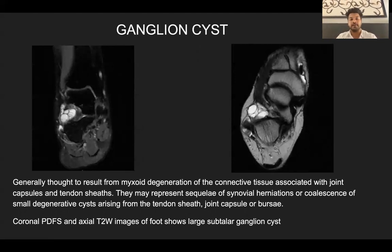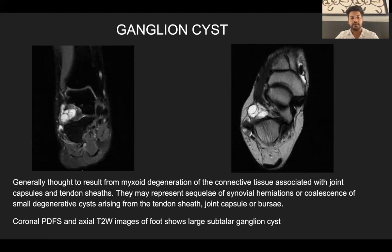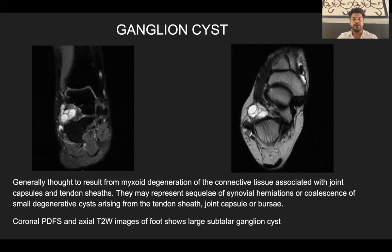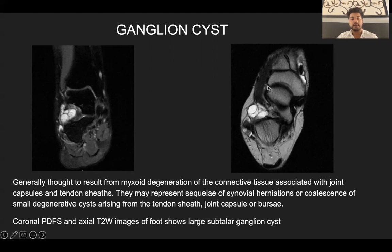The next common case was ganglion cyst. Ganglion cysts are generally thought to result from myxoid degeneration of connective tissue associated with joint capsules and tendon sheaths. They may represent sequelae of synovial herniations or coalescence of small degenerative cysts arising from the tendon sheath, joint capsule, or bursae. Coronal proton density fat-saturated images and axial T2-weighted images of the foot show a large subtalar ganglion cyst with fluid signal intensity.